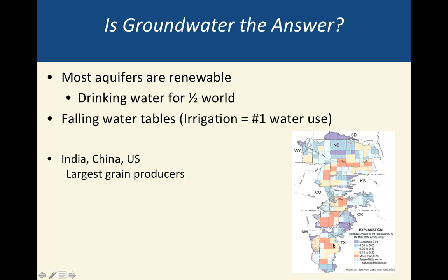The reason we use this aquifer for irrigation is because the United States produces a lot of grain, wheat, and corn — crops that consume a lot of water. India and China do the same; rice is a very common crop grown there that requires a lot of water.